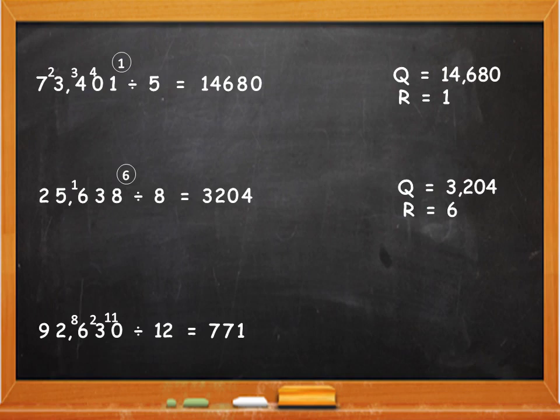Last, divide 110 by 12. 12 will go 9 times in 110. 12 nines are 108 and 110 minus 108 is 2. So now Q is 7,719 and R is equal to 2.